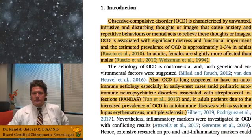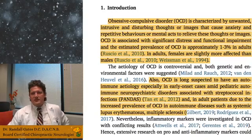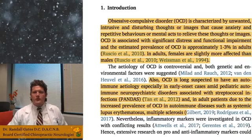Those are the characteristic features of OCD. OCD is associated with significant distress and functional impairment, and it's like one to three percent of adults who have OCD, which is pretty common out of the general population. Depression is around 16%, anxiety can be upwards of 30%, schizophrenia is 1%, so one to three percent is not completely uncommon. There is also a female preponderance. OCD is long suspected to have an autoimmune etiology, especially in the early onset cases.